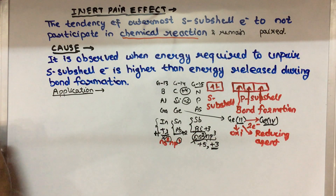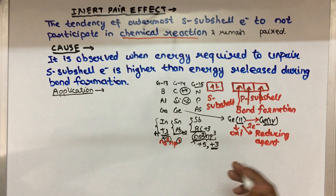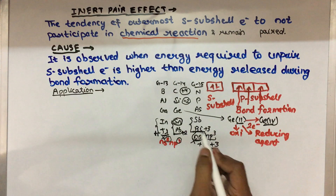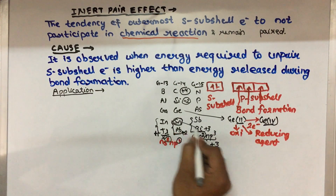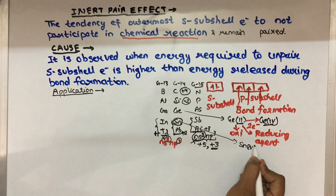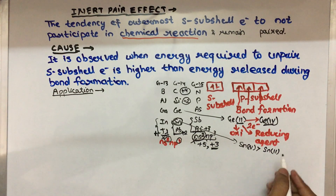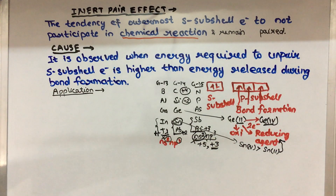So we can say Ge(II) is a reducing agent because Ge(IV) is the stable oxidation state. Similarly, in the case of tin: Sn(IV) oxidation state is more stable than Sn(II), therefore Sn(II) acts as a reducing agent.